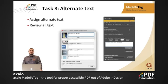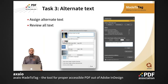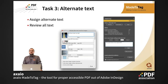The third task is alternate text. You can define and review alternate text directly in Me2Tag. We have a nicer overview of all images in the document and you can define all the alternate text in one dialogue. We also have a review available so you can send it to an editor to preview the alternate text.